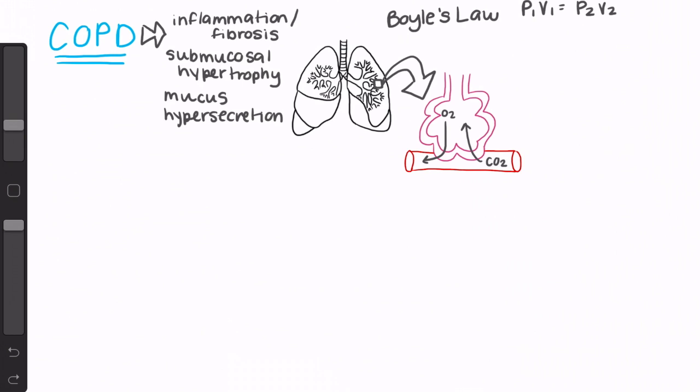In COPD lungs, we see bronchoconstriction and mucus secretion in the bronchi and bronchioles and decreased elasticity of the alveolar membrane. This ultimately leads to a ventilation-perfusion or VQ mismatch with an intrapulmonary shunt because the alveoli are being poorly ventilated. This leaves the patient not only hypoxic but also acidotic because they're retaining CO2.